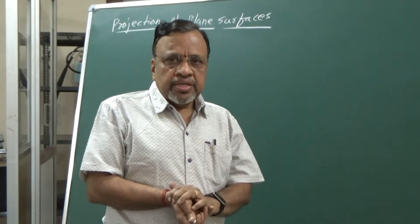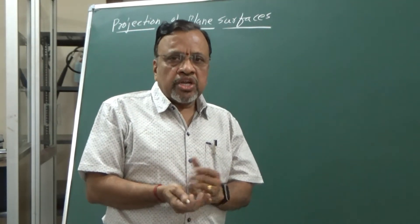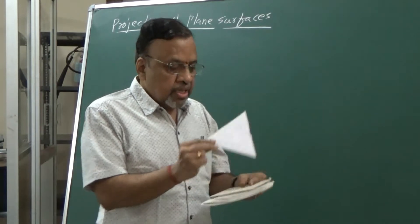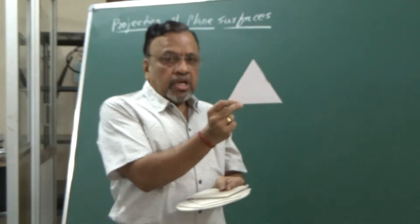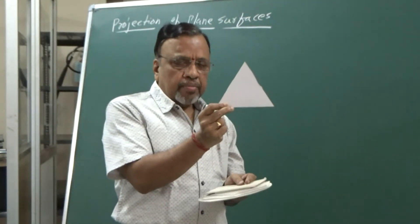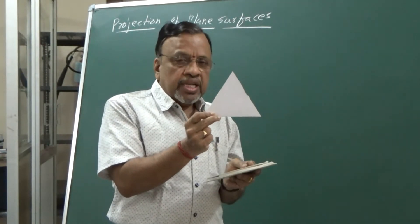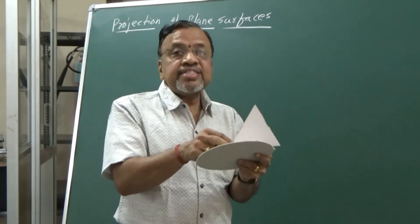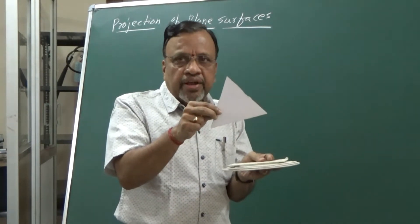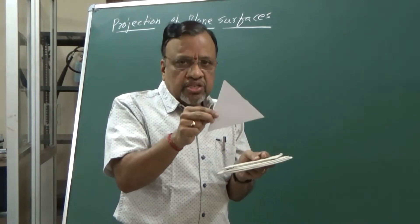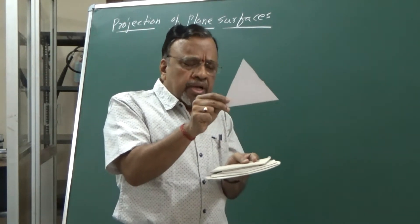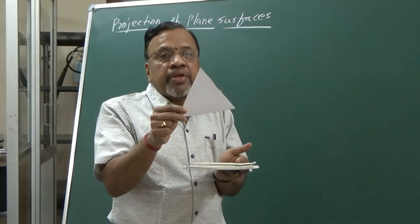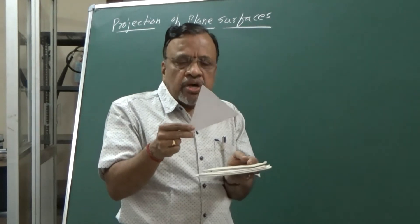Along with polygons, we also consider a circular lamina. Just for illustration, I am going to show these polygons so you can identify them. As you can see, this particular polygon has three sides. We consider these plane surfaces as regular plane surfaces — regular means all the sides are the same. Since it has three sides, we consider this to be a triangular lamina.